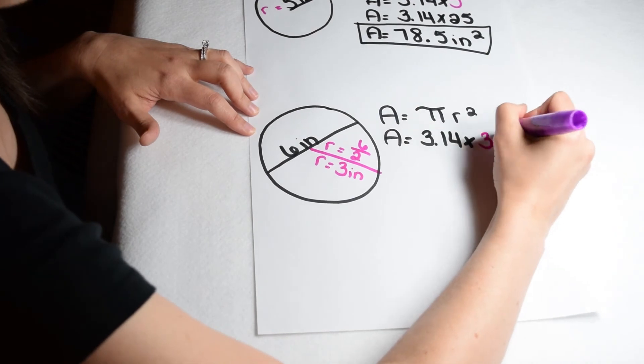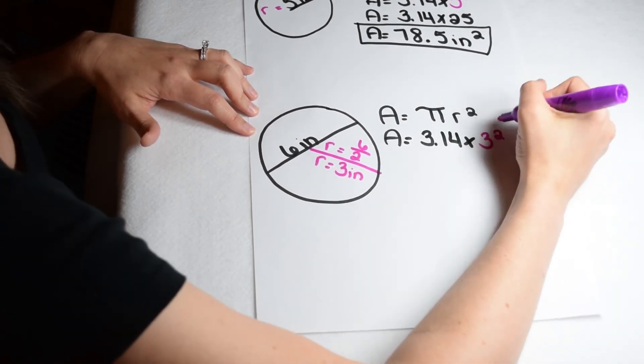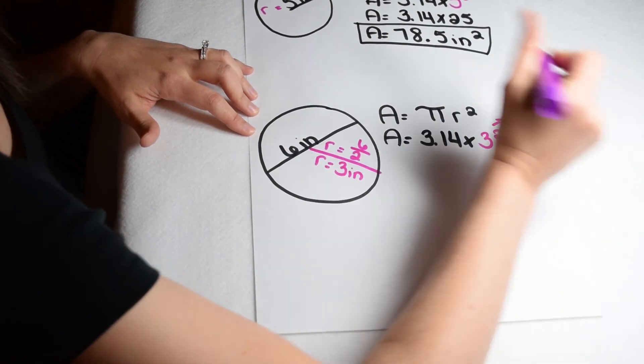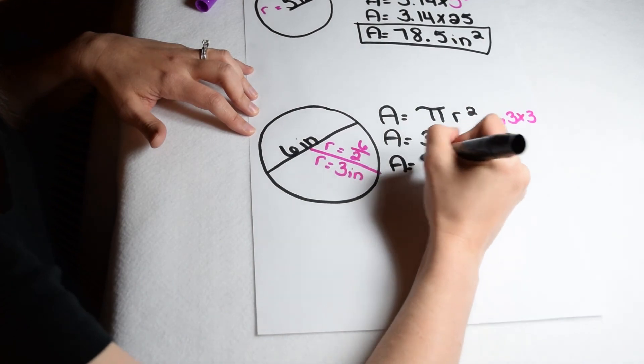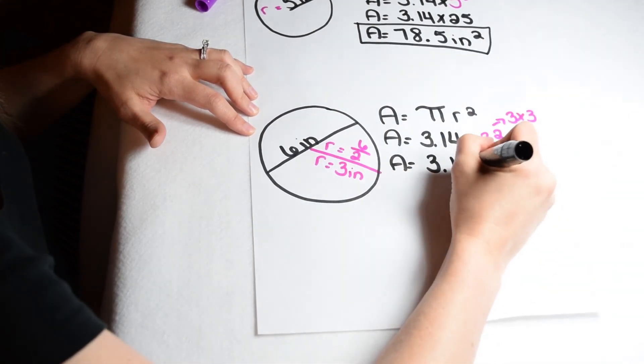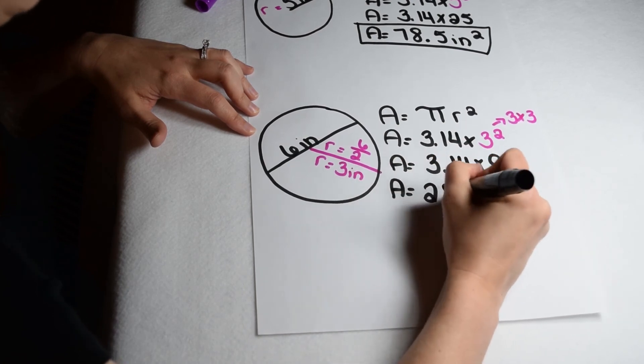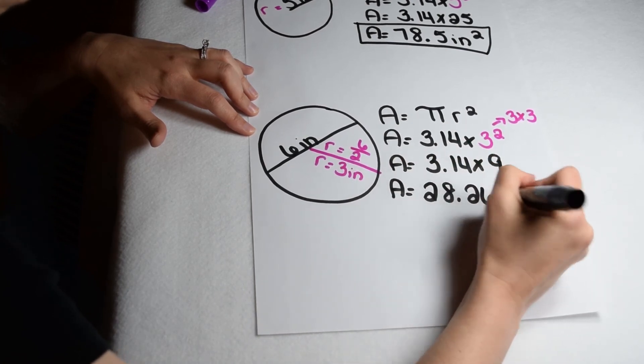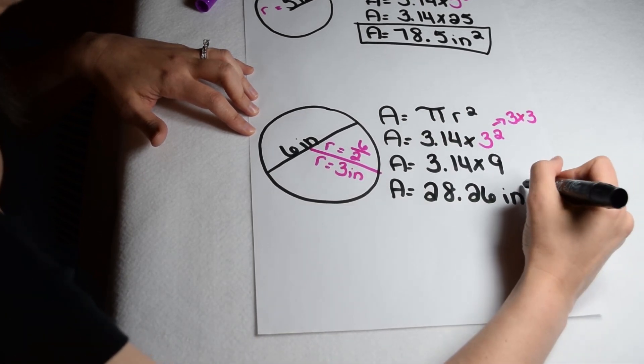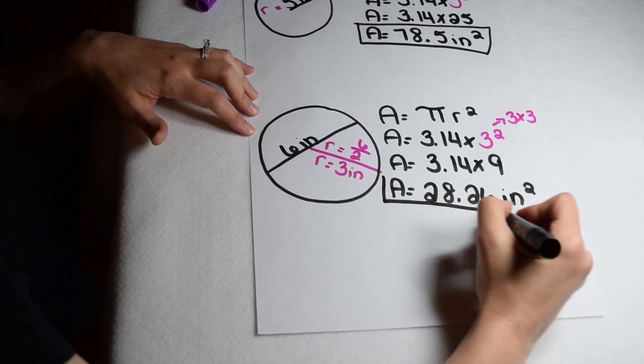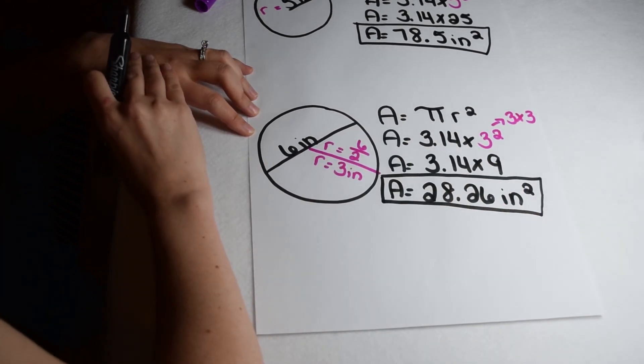So I'm solving 3.14 times 3 squared. Again, when we solve something to the exponent, we're multiplying the value times itself. 3 squared means I need to solve 3 times 3. I'm going to find my area by doing 3.14 times 9. Using my rules for decimal multiplication, 3.14 times 9 gives me 28 and 26 hundredths. My circle is measured in inches, so my area needs to be labeled in square inches. So the area of this circle comes out to be 28 and 26 hundredths square inches.